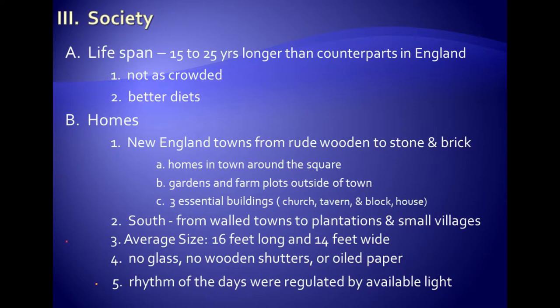Reasons for that are varied, but we could point to two things in particular. For one thing, it was not as crowded — there were no large overpopulated cities, and there was less available land in England. People living closer together made the spread of disease much more possible, along with lack of jobs and a high rate of crime. Also, people in the colonies had a better diet — more fresh air, more vegetables. So their longer lifespan included those two reasons.